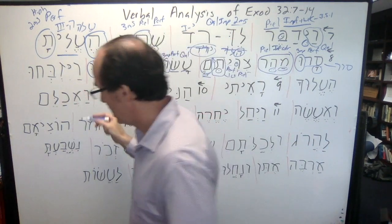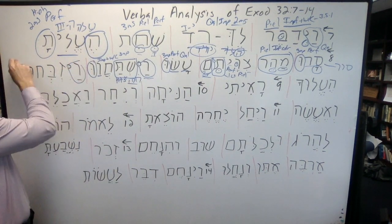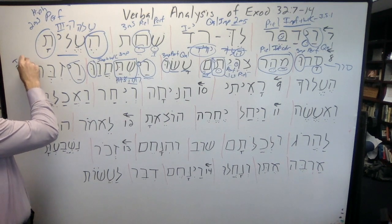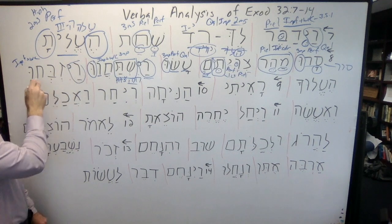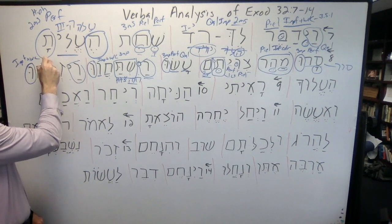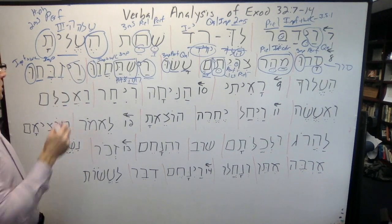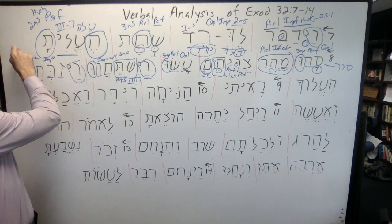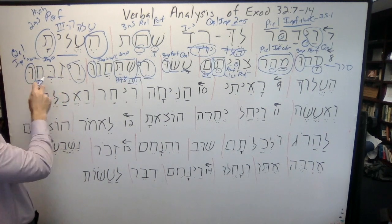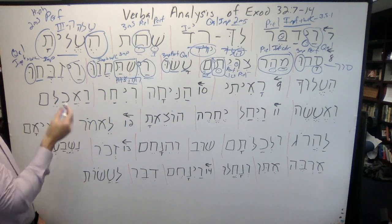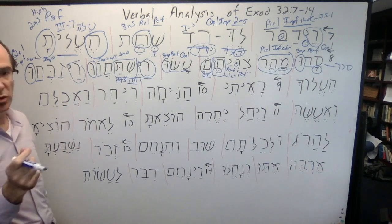Our next verb is a completely regular verb. We see the vav-consecutive, so we know we have imperfect plus vav-consecutive. Notice how it's just carrying on the action, so that's a sequential. It's third masculine plural, and the whole root is there — yizbehu, 'and they sacrifice.' The Qal is fientive and the vav-consecutive imperfect is sequential here.